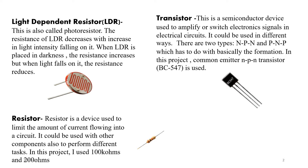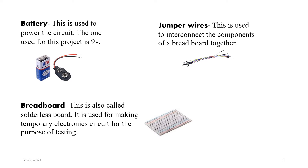Resistors are used to reduce the current flowing into particular circuits, depending on their resistance. They can also be used in connection with a capacitor to time a circuit, so they can be used in many different ways. The resistor is a device used to limit the amount of current flowing into a circuit, and can be used with other components to perform different tasks. In this project I use 100 kilohms and 200 ohms.